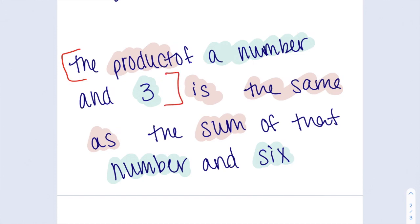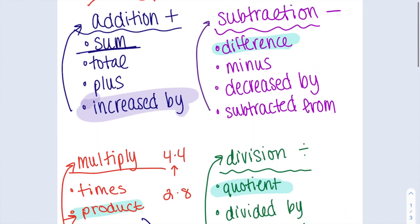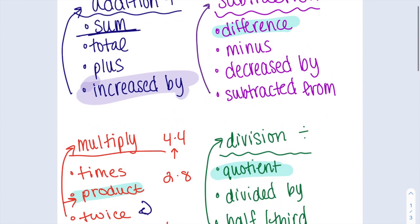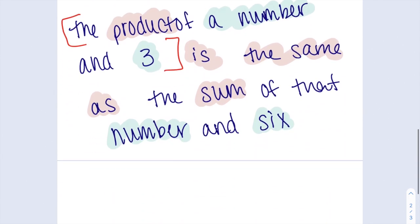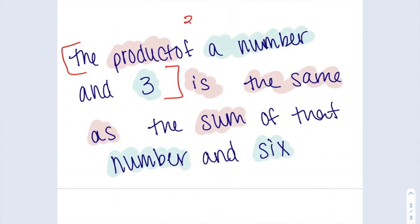The product, going back up to my list, is multiplying. So I'm going to have a product of a number and 3, which means 3 times x. Because remember, a number is talking about x. It's asking for a variable there. So I have 3x.